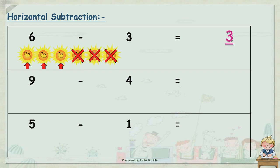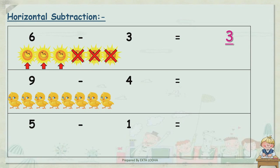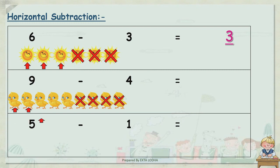Now let's see another one: 9 minus 4. Count: 1, 2, 3, 4, 5, 6, 7, 8, 9. We have to subtract 4 from these, so let's cross out 1, 2, 3, 4. How many are remaining? Let's count: 1, 2, 3, 4, and 5. So what is our answer? 5 is our answer.